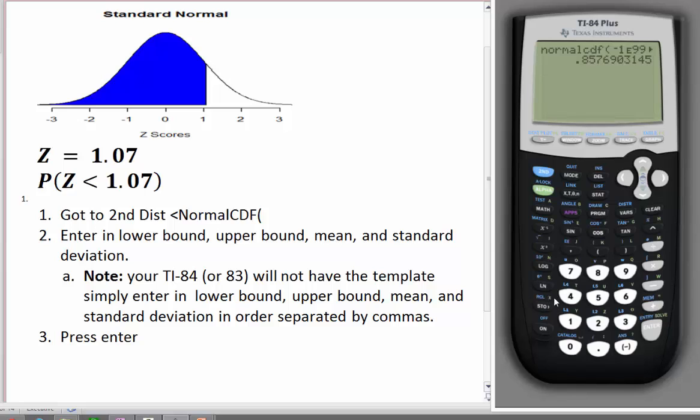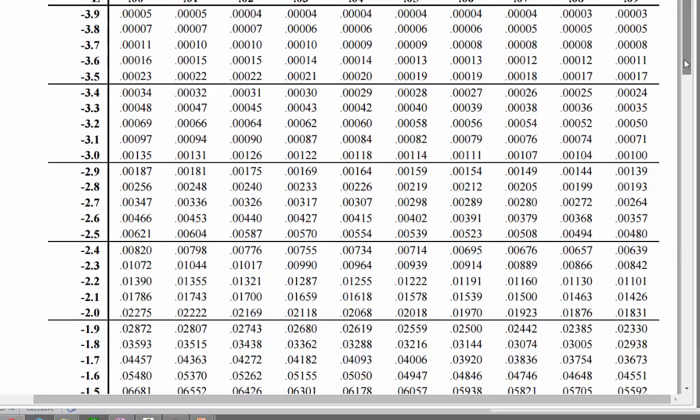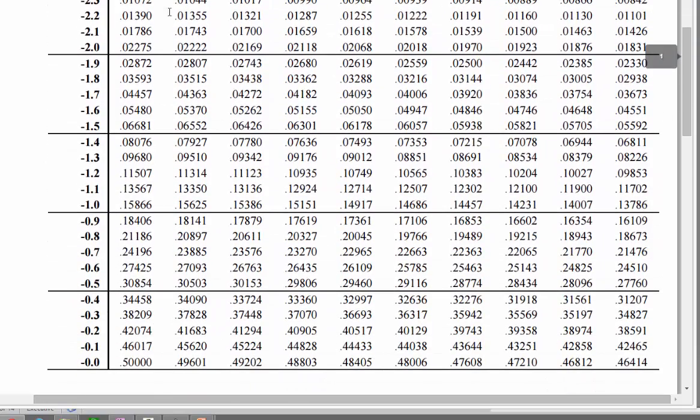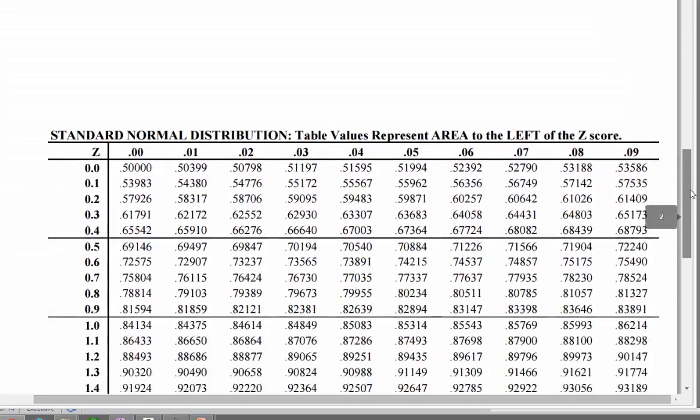Now let's just go ahead and check on the table to see if essentially this is about the same. So if we go to the standard normal table, we can see that if we want to find the area that falls below 1.07, then we're going to look at these z-scores on this side. And we want to find 1.0. That's the beginning of our z.